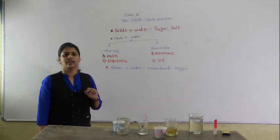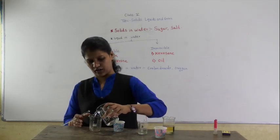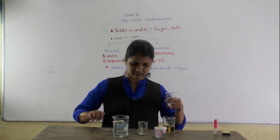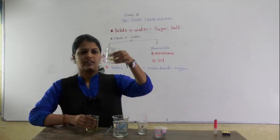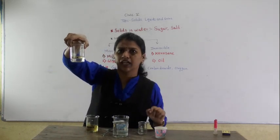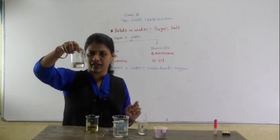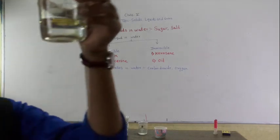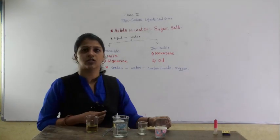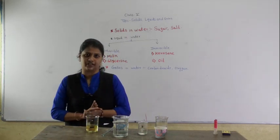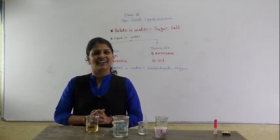And now immiscible liquids. This is oil. I will take another beaker and add some water in it, then add oil. If you see, you can clearly see two layers — the oil is floating on the water. Oil is floating on the water and is not dissolved in the water. There are some liquids which cannot dissolve in water — such liquids are called immiscible liquids.